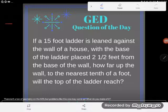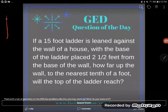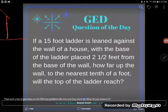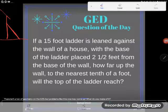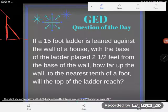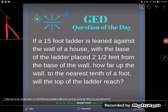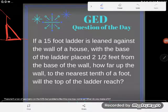So I've got a house here, it's got a wall and some ground, and I have a ladder leaning up against the wall. Notice what shape is formed by the wall, the ladder, and the ground? That sure looks like a right triangle, a triangle with a perfect 90-degree angle.